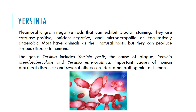First of all we will talk about Yersinia. Yersinia are pleomorphic gram-negative rods that can exhibit bipolar staining, a characteristic of this bacterial species under light microscope. They are catalase positive, oxidase negative, and microaerophilic or facultatively anaerobic. Most have animals as their natural hosts but they can produce serious disease in humans. The genus Yersinia includes Yersinia pestis, the cause of plague, Yersinia pseudotuberculosis, and Yersinia enterocolitica, which are associated with human diarrheal diseases, and several others considered non-pathogenic for humans.